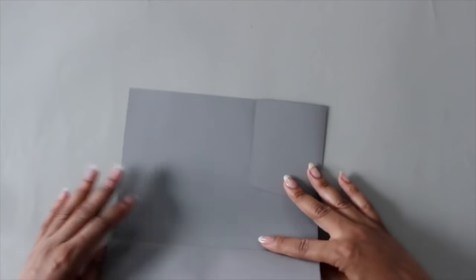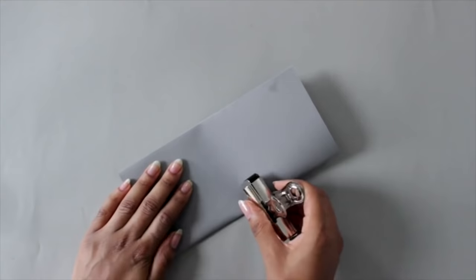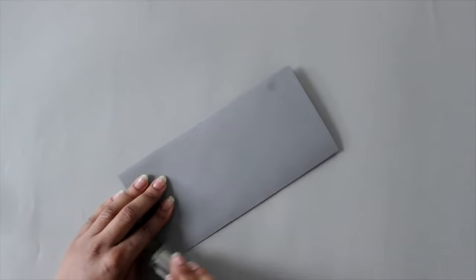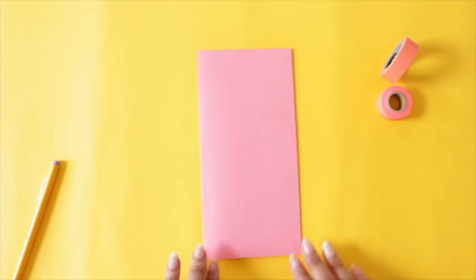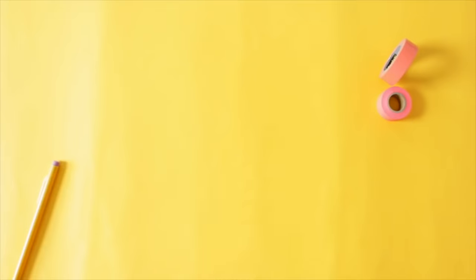Next we're gonna crease the center by folding our cover in half. You can actually do this now or later but I find it easier to do now. Again a bone folder would pretty much come in handy right now but I'm just gonna use whatever's on my desk. Don't worry guys we're halfway there. I'm just gonna round the corners and then we're gonna move on to the next step.